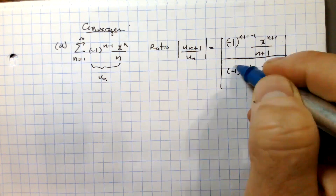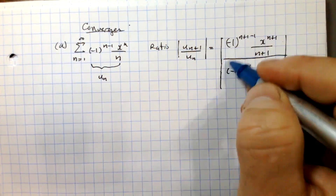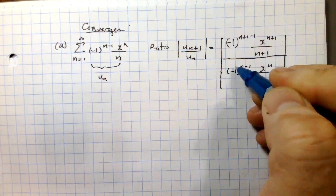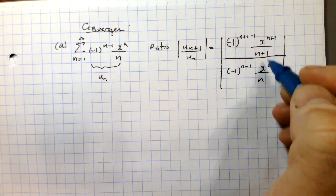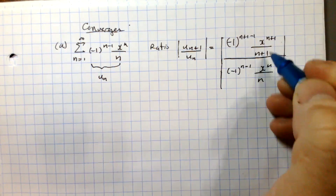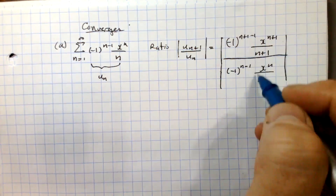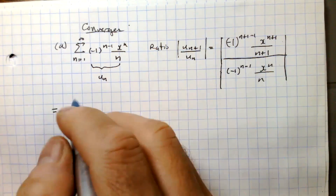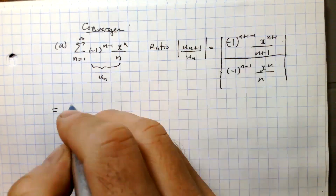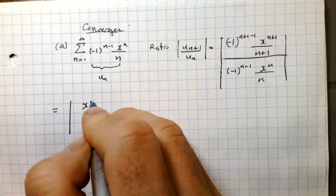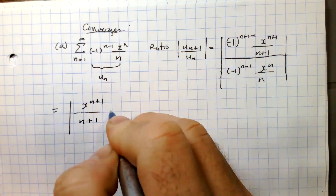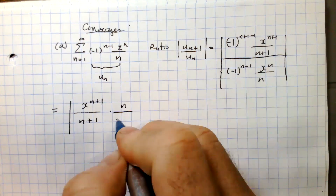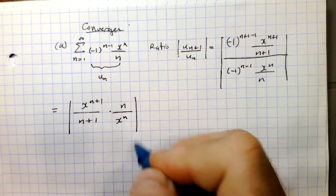We're going to flip this and take the reciprocal. Since we're taking the absolute value, the negative 1 terms don't matter because their absolute value is always positive. So we're really just looking at the ratio of these two terms. Reciprocating, we get x to the (n+1) over (n+1), multiplied by n over x to the n.